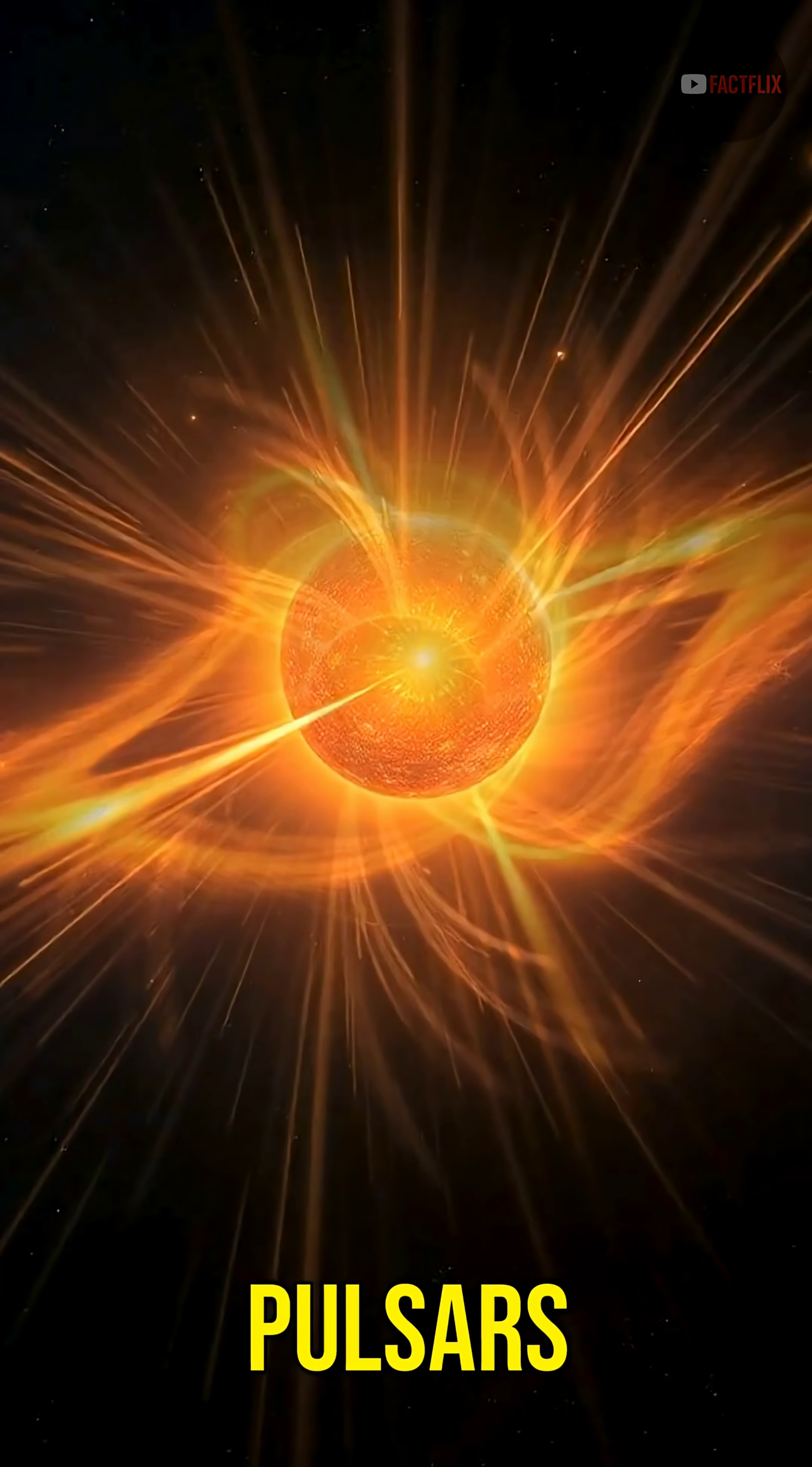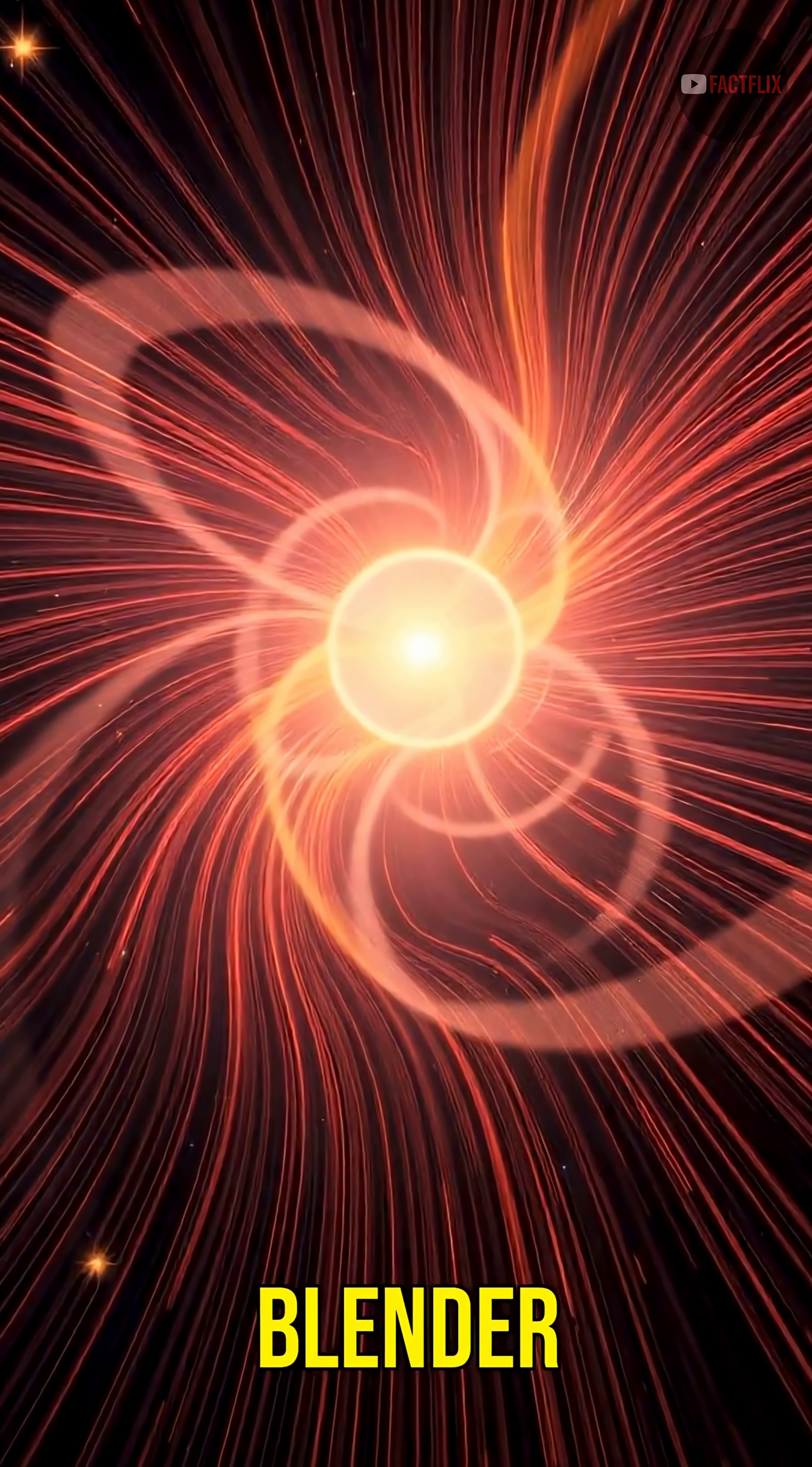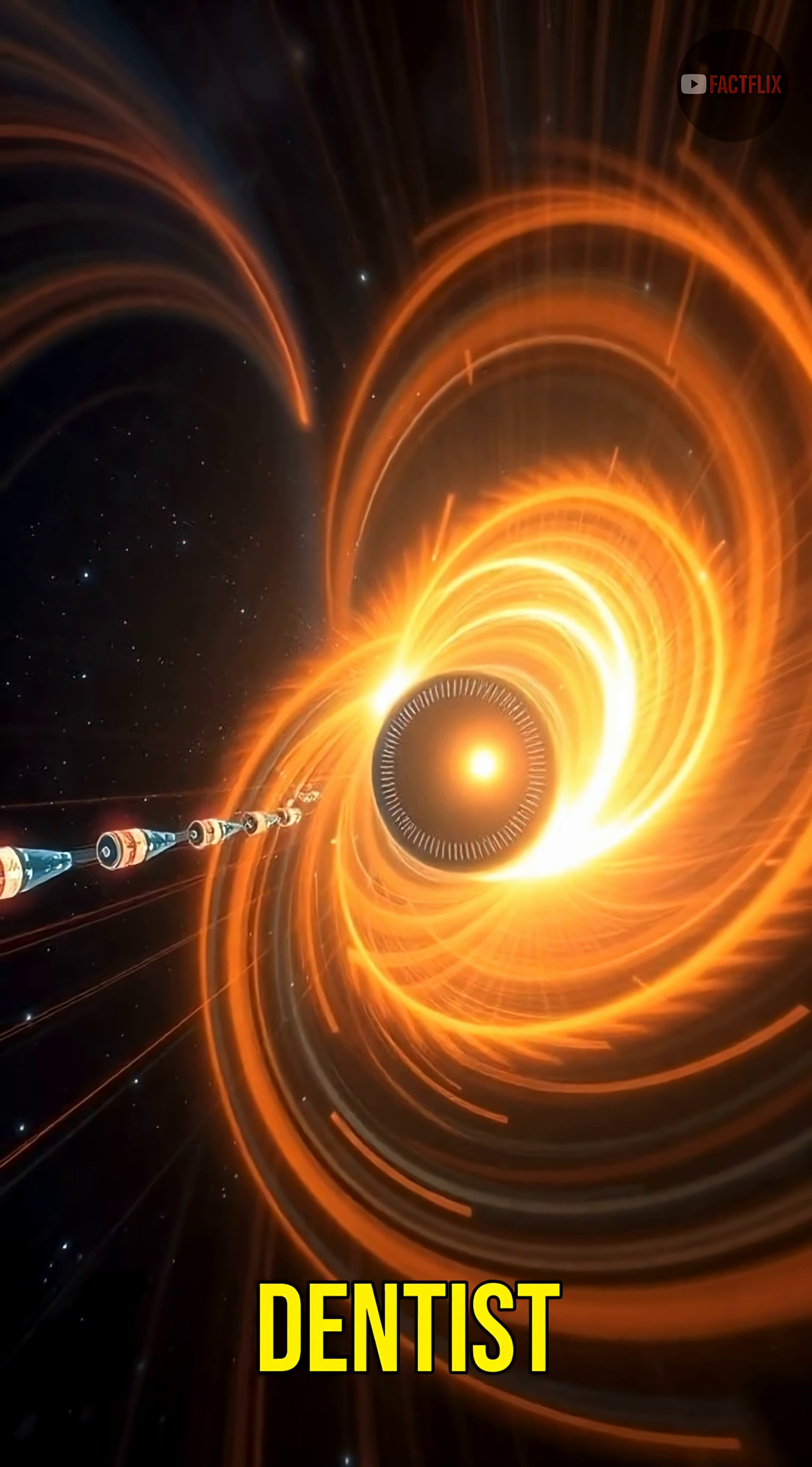Some neutron stars called pulsars spin 700 times per second. That's faster than a blender, a jet engine, and even a dentist's drill.